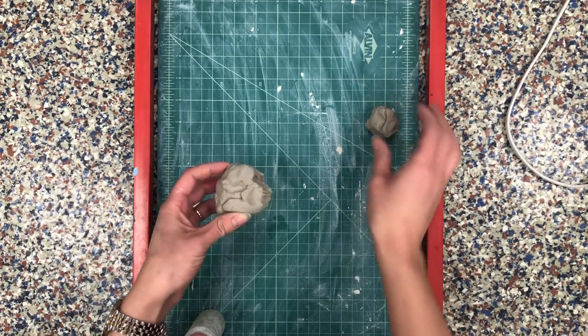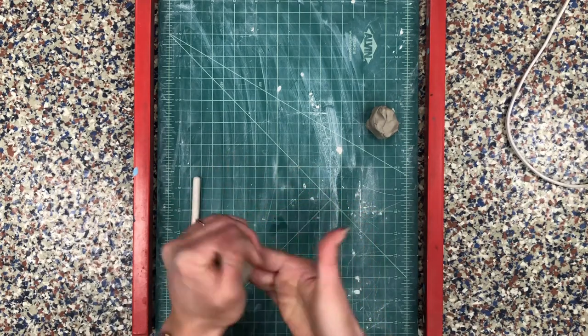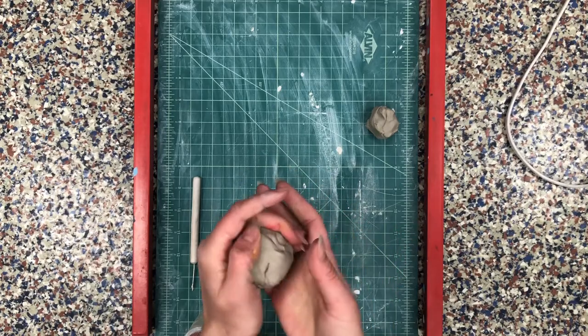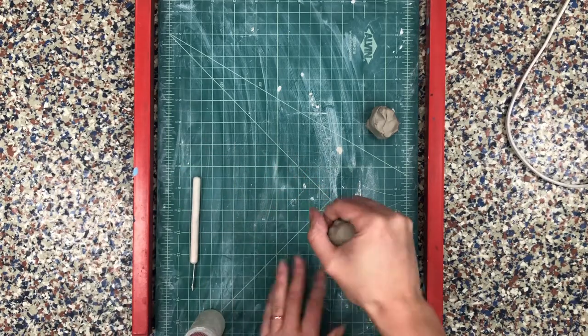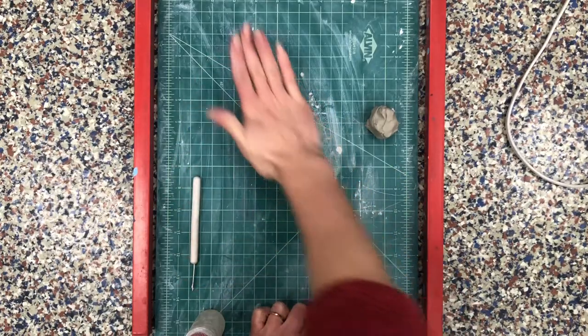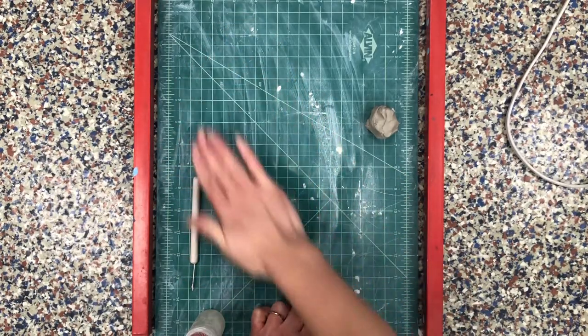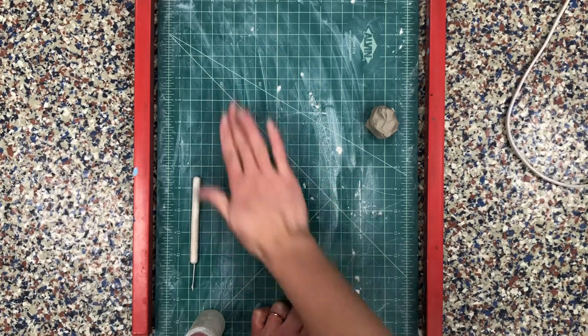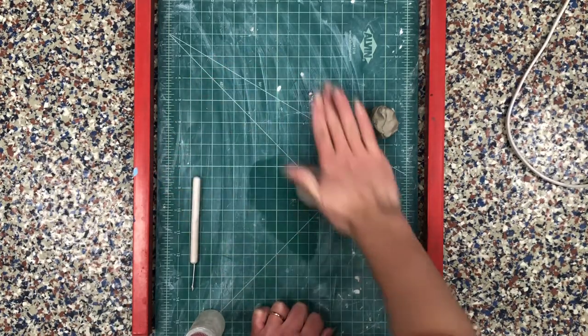Now I'm gonna set the head to the side and I'm gonna work with the body first. The body is going to be made out of a pinch pot. So the first step of making a pinch pot is you have to roll your clay into a ball. Now the more time you take to make your ball nice and even without cracks, then the more successful your pinch pot will be.